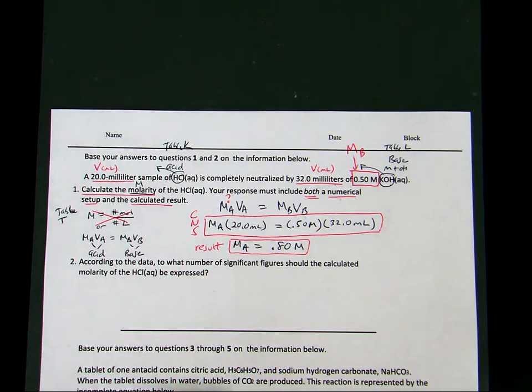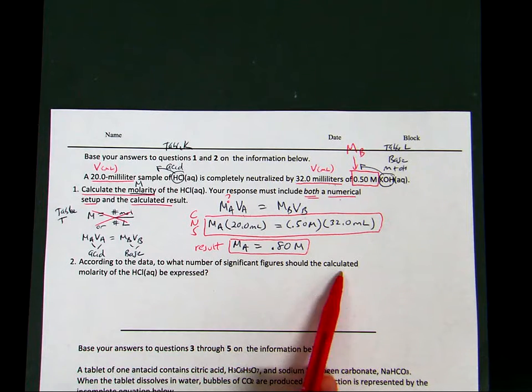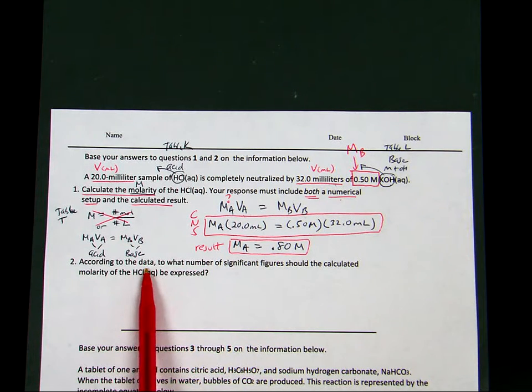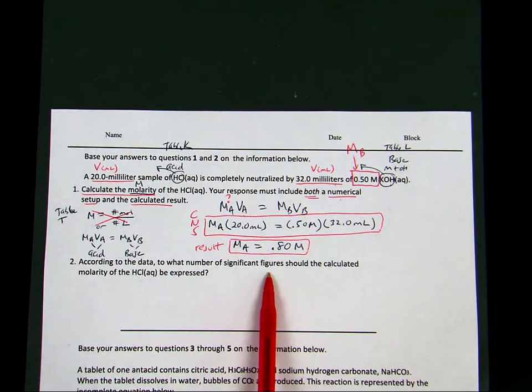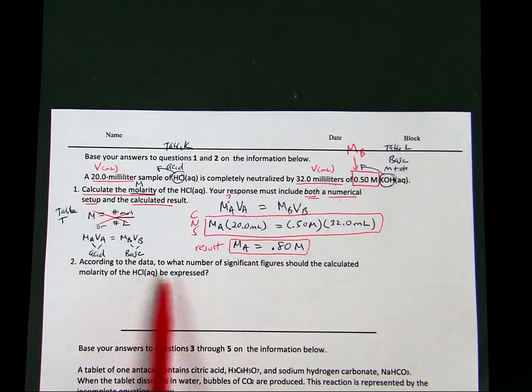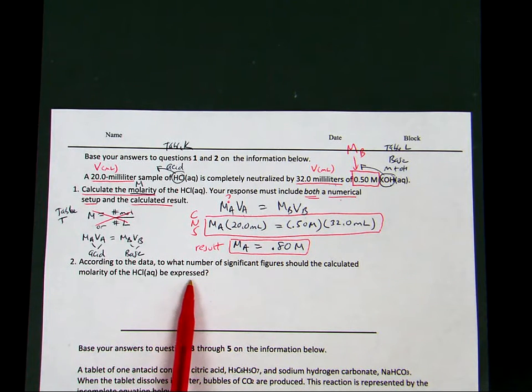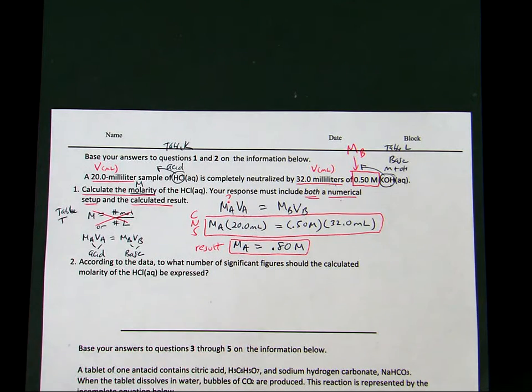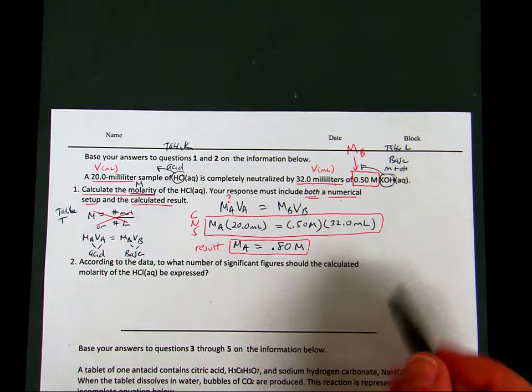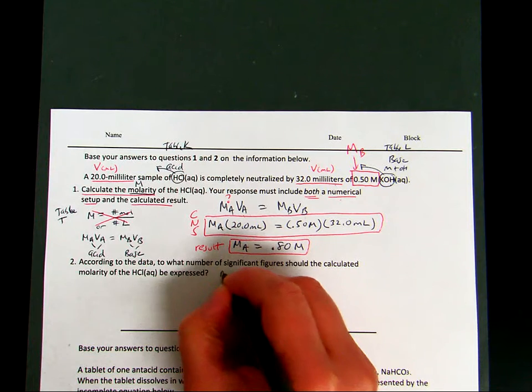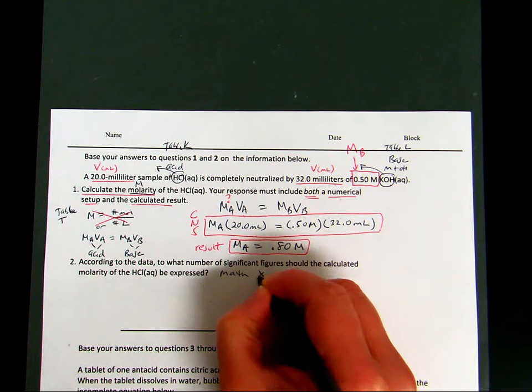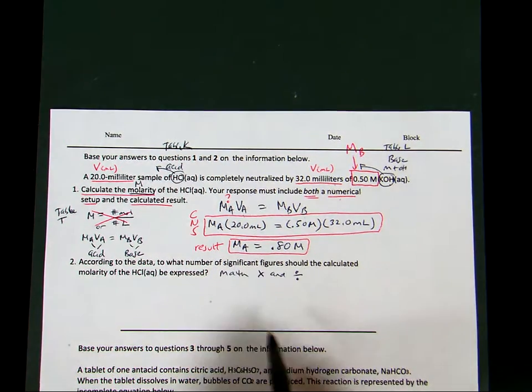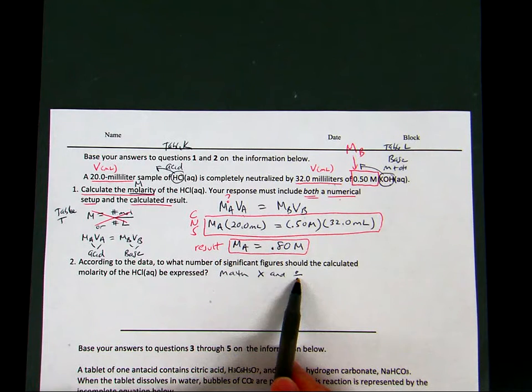Now, question two. I'm not a big fan of how it's asked, because I think it's a little confusing. According to the data, to what number of significant figures should the calculated molarity be expressed? It's basically asking you how many sig figs should be in your answer. So take a look. We are multiplying and dividing. So the math here is multiplying and dividing. So when your math is based on multiplication and division, you round to the lower number of sig figs.